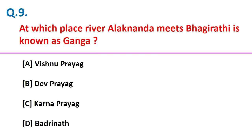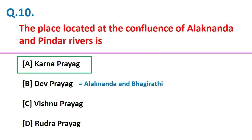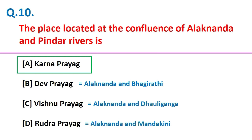At which place does river Alaknanda meet Bhagirathi to be known as Ganga? Devprayag. The confluence of Alaknanda and Bhagirathi is known as Devprayag. The confluence of Alaknanda and Dhauliganga is known as Vishnuprayag, and the confluence of Alaknanda and Mandakini is known as Rudraprayag.